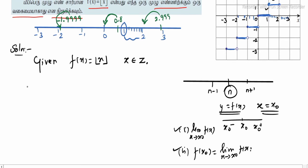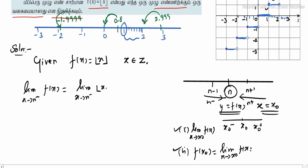Now, choosing the point n: the left-hand limit, that is limit as x tends to n minus of f(x), equals the greatest integer function approaching from the left of n. Since we approach from the left side of n, the greatest integer value there is n minus 1. So the left-hand limit outcome is n minus 1.